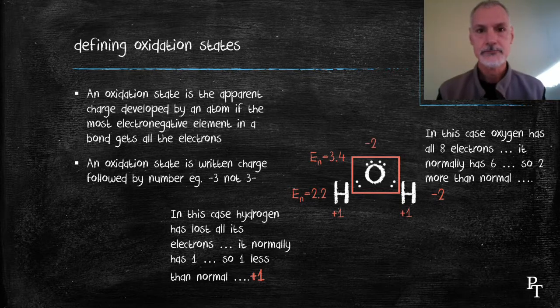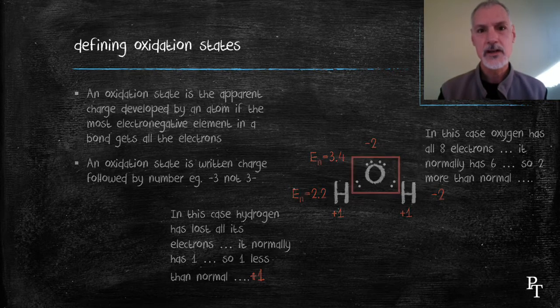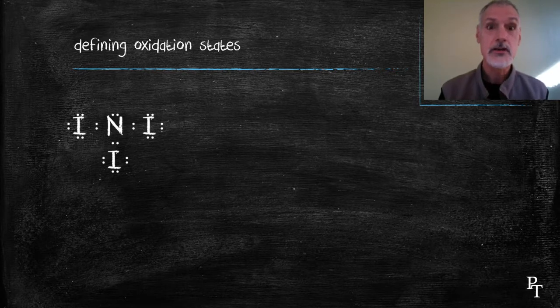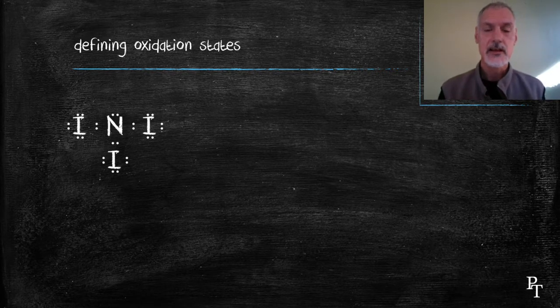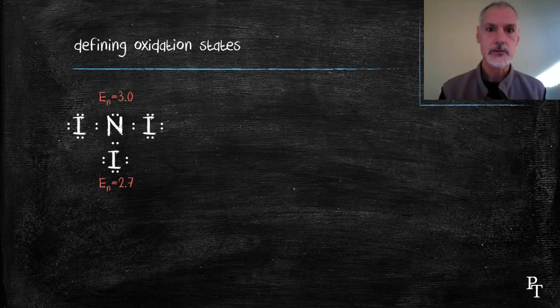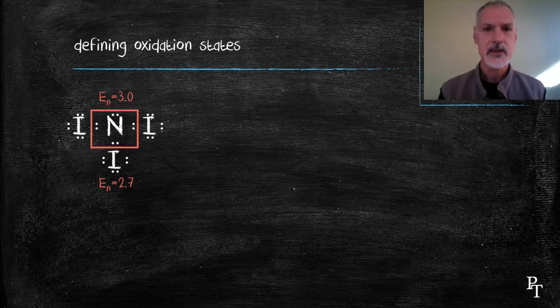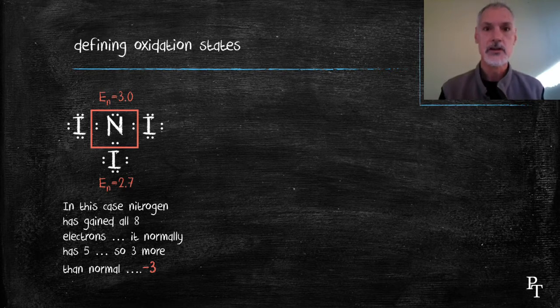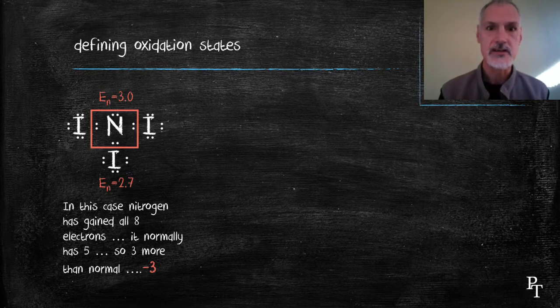Let's look at a couple other examples. In the next one, I'm going to look at nitrogen triiodide, a somewhat explosive material. Again, I look at their electronegativities, and I can see that nitrogen wins the tug of war for electrons. So it's going to capture all of the electrons in the center, all eight. It has eight electrons. From its position in the table, it should only have five, three more than normal. As a result, it's developed an oxidation state of minus three.